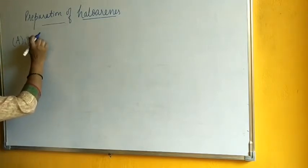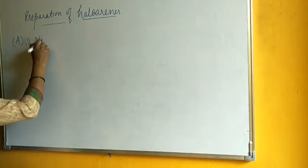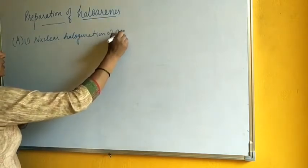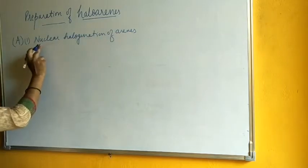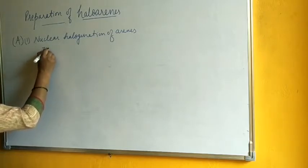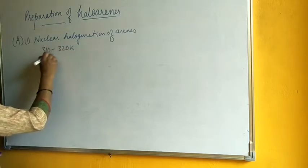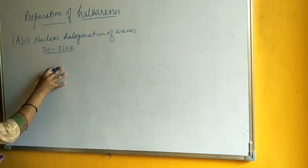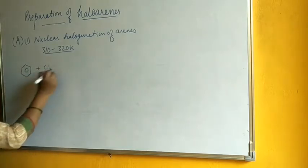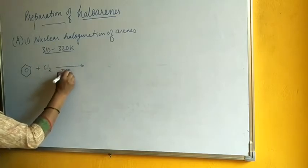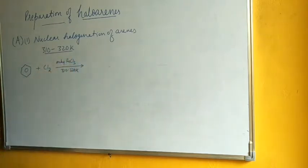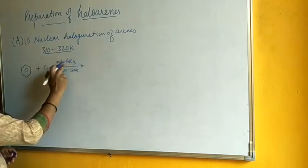The first method is nuclear halogenation of arenes. This is carried out in the dark at a temperature of 310 to 320 Kelvin — not in presence of direct sunlight. For benzene, the halogenation is done at 310 to 320 Kelvin in presence of anhydrous FeCl3 or anhydrous AlCl3, which acts as a halogen carrier.